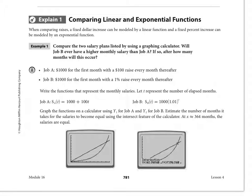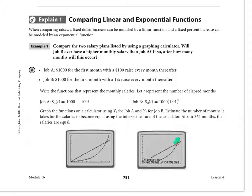What does this represent? The linear function is greater than the exponential up until about 363 months, at which point their values are equal — they intersect. So if you're going to work for this company less than 363 months, the best raise option is the hundred dollars per month — the linear. If you'll be there longer than 363 months, take the one percent raise every month, because after that point the exponential function grows more quickly.